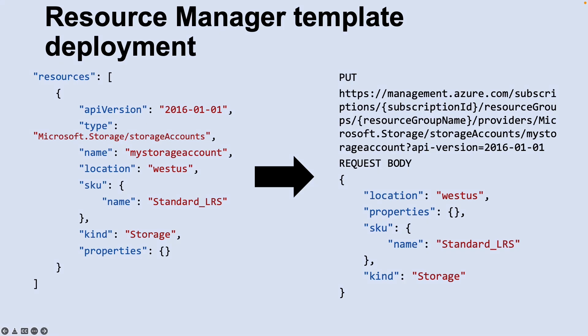With Resource Manager, you can create a template in JSON format that defines the infrastructure and configuration of your Azure solution. By using a template, you can repeatedly deploy your solution throughout its lifecycle and have confidence that your resources are deployed in a consistent state. When you create a solution from the portal, the solution automatically includes a deployment template. You don't have to create your template from scratch — you can start with the template for your solution and customize it to meet your specific needs.